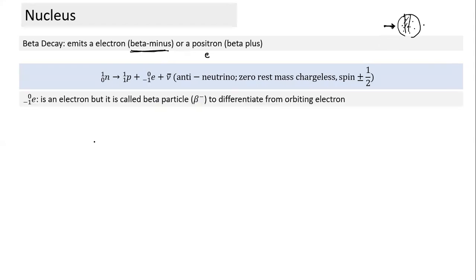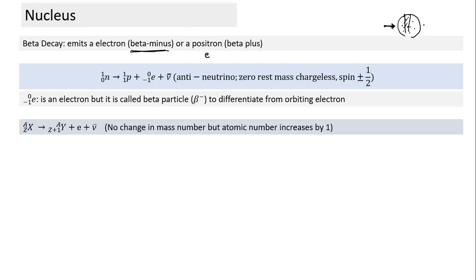The beta particle is an electron, but called beta minus to differentiate it from orbital electrons. Once emitted, it has exactly the same properties as an orbital electron. In terms of elemental notation, beta minus decay increases atomic number Z by 1 while mass number A remains the same, because an extra proton is added.